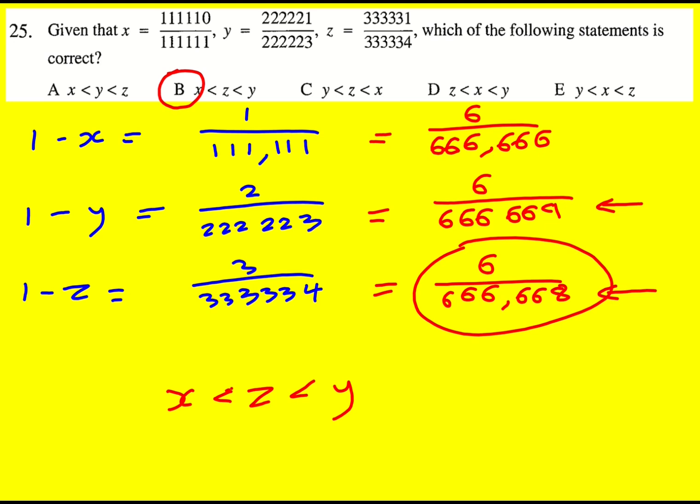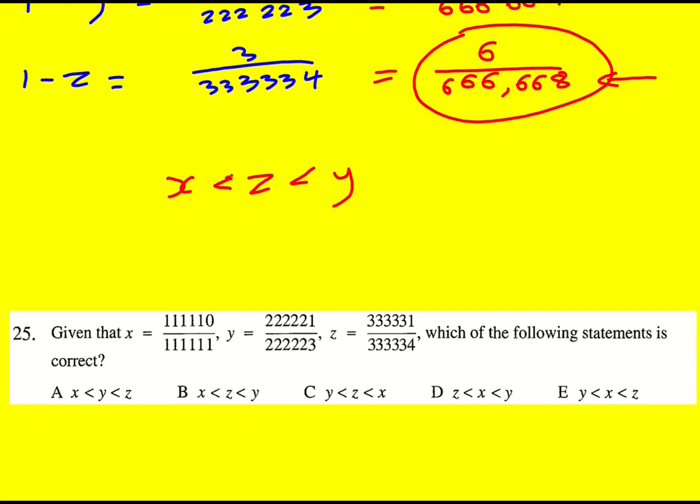Now, I think I've learned something from this question, because I didn't do it like that. But if you're comparing numbers that are very close to the same number, then actually look at the differences, and it might just work out a lot simpler. Okay, I'm going to talk about how I did it. This is method two.